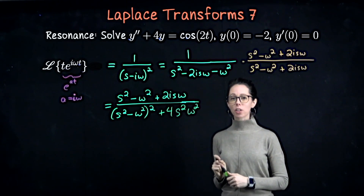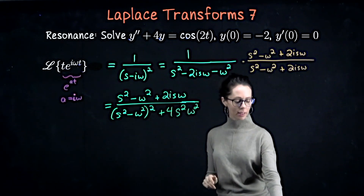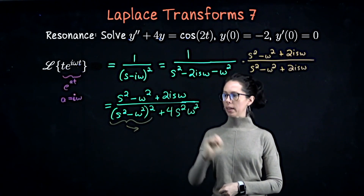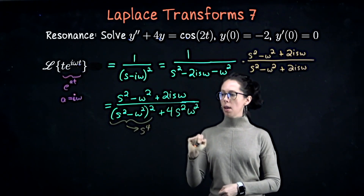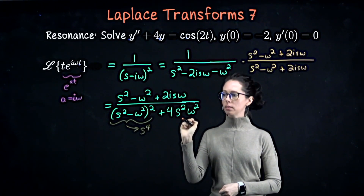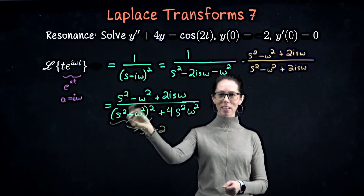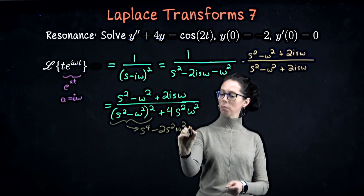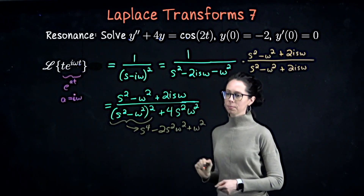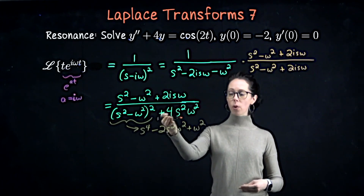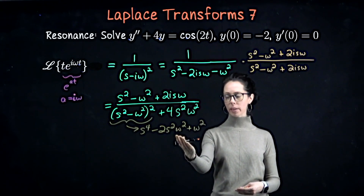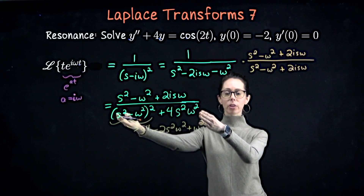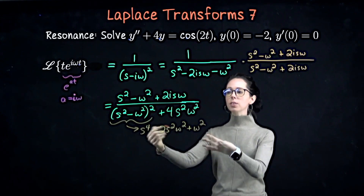We can do better with this denominator. Expanding s squared minus omega squared, all squared, gives s to the fourth minus 2 s squared omega squared plus omega to the fourth. Adding 4 s squared omega squared to that flips the middle term to positive 2 s squared omega squared, and we realize the entire denominator is s squared plus omega squared, all squared.